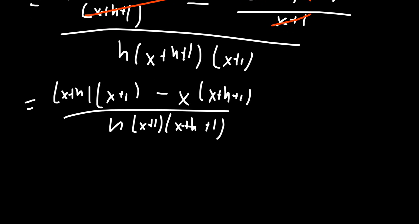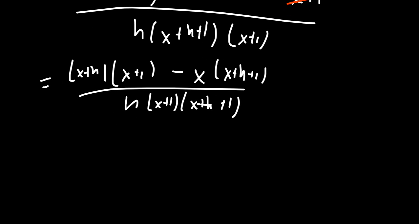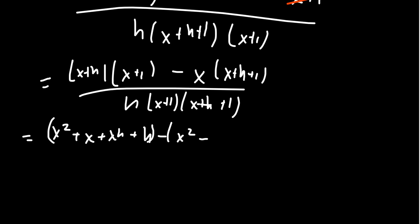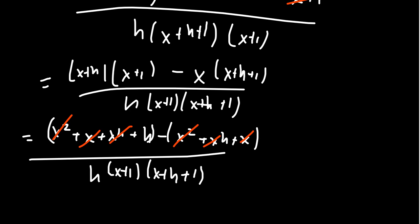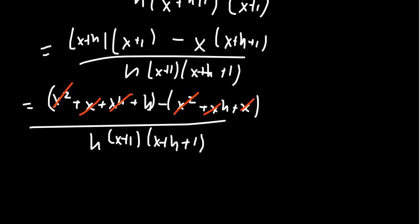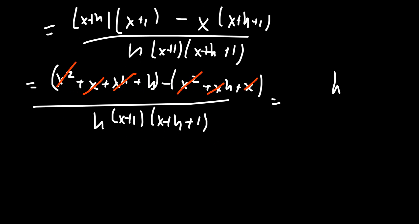After cancellation we have (x+h)(x+1) minus x(x+h+1), all above h(x+1)(x+h+1). Now expand in the numerator: FOIL (x+h)(x+1) to get x² + x + xh + h, then distribute x to get x² + xh + x. Combine like terms: the x² terms cancel, the x terms cancel, and the xh terms cancel. The only thing that survives is h. So we have h over h(x+1)(x+h+1).